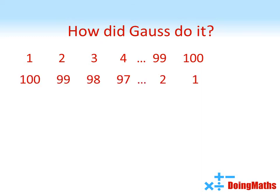So we can demonstrate this by writing out the same list, but backwards below. Now, you can see that if we add each pair together, 1 add 100, 2 add 99, 3 add 98, and so on, each pairing gives us an answer of 101.